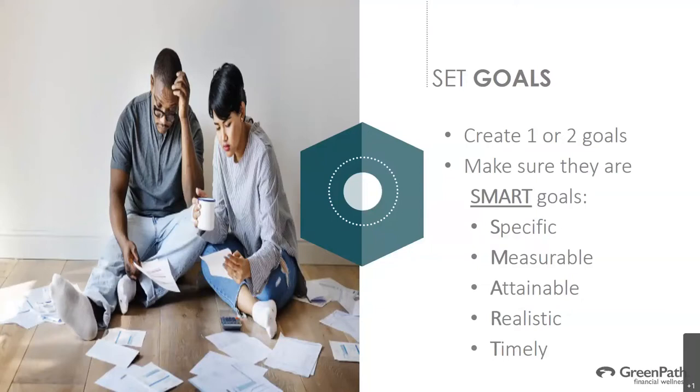Make sure though they are SMART goals. So SMART goals would be something that is Specific. This is the what, where, when, and how. For instance, that you want to purchase a car, you want to determine what car, where you plan to buy it from, when you want to buy it, and how much you're going to have to pay to purchase it.